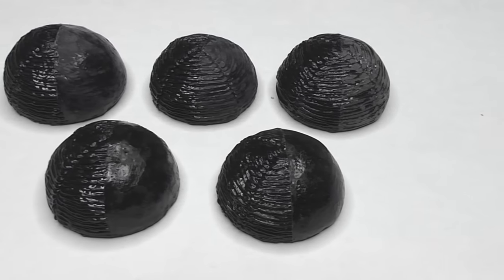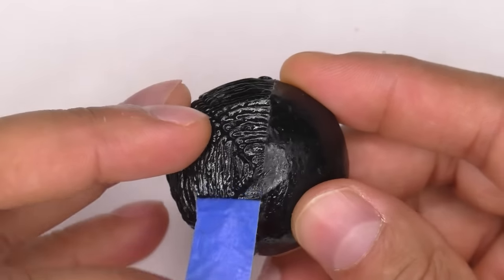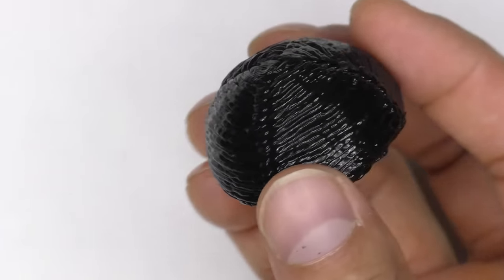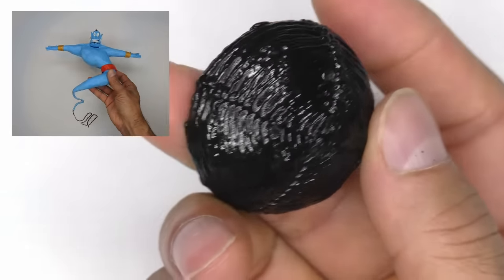One question that comes up a lot is about smoothing 3D pen creations. Usually people want to know how I get something so smooth. Raw 3D pen texture can be very rough, which is why many people are surprised when they see a smooth 3D pen creation.